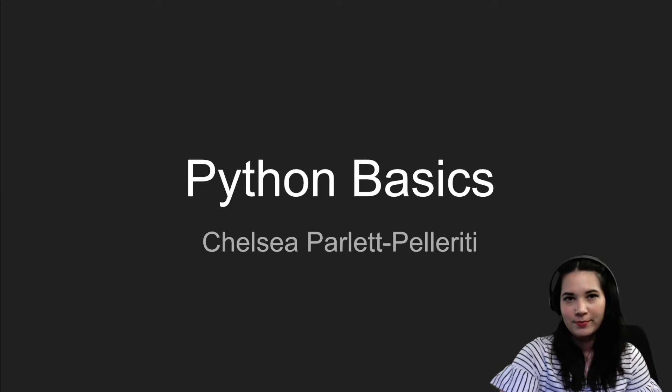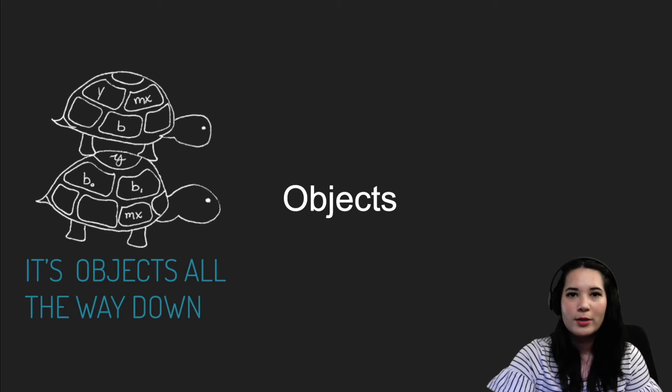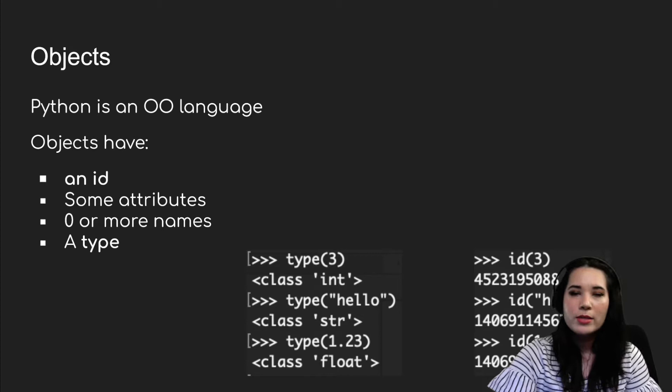Hello and welcome to the first part of your Python basics lecture. In Python, everything is an object, and what we're doing here is called object-oriented programming, which is something you'll continue to learn as you go through this series and take the next class 231. Since everything in Python is an object, it's important for us to learn about them. Objects are concepts in Python and they always have an ID, they usually have some attributes, they have zero or more names, and they have a type.